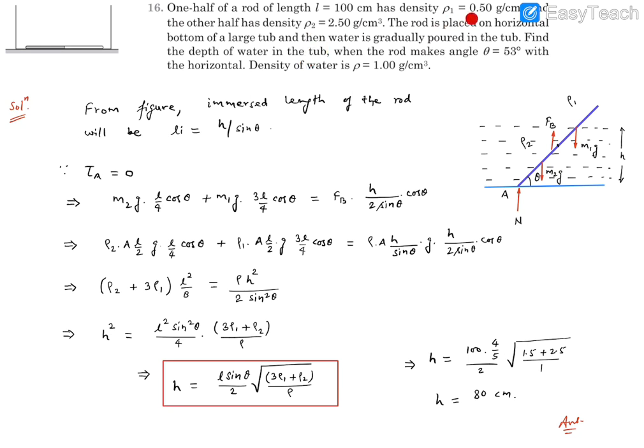Now if you look at the average density, that turns out to be 2.5 plus 0.5 by 2, that is basically 3 by 2, that is 1.5. And the density of water is 1 gram per cc, that means this is more dense. So it will not float, it will sink, so it will have contact with the ground or bottom of the tub.